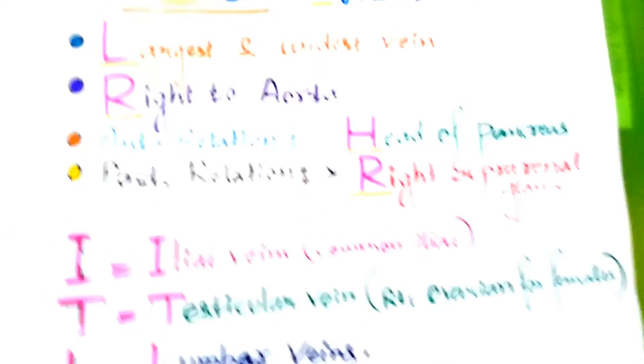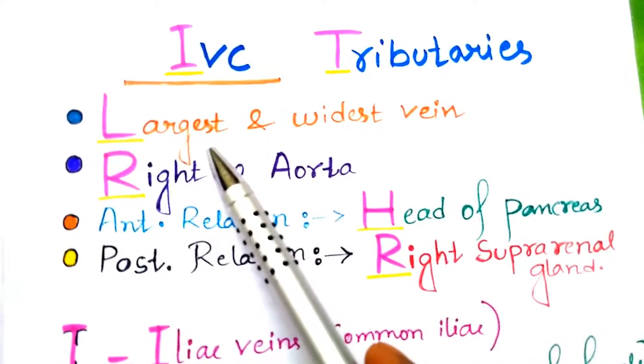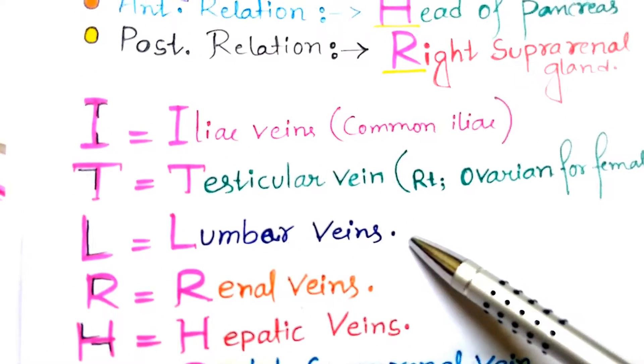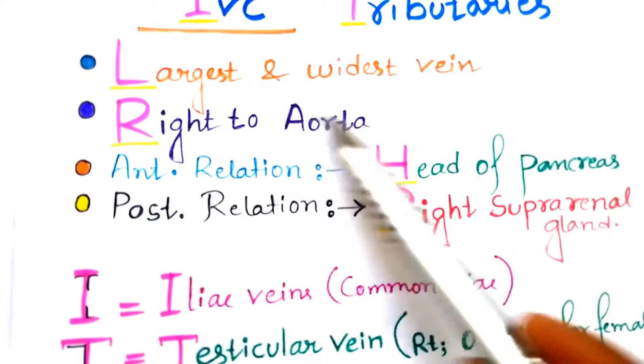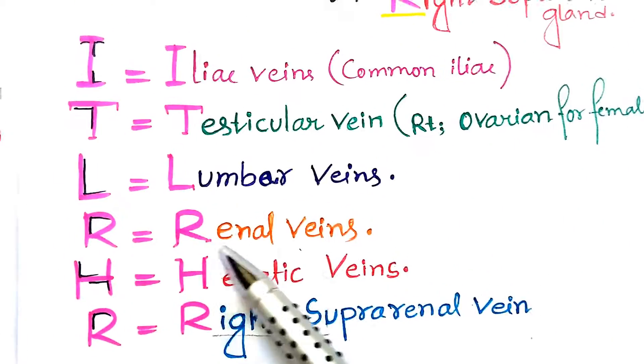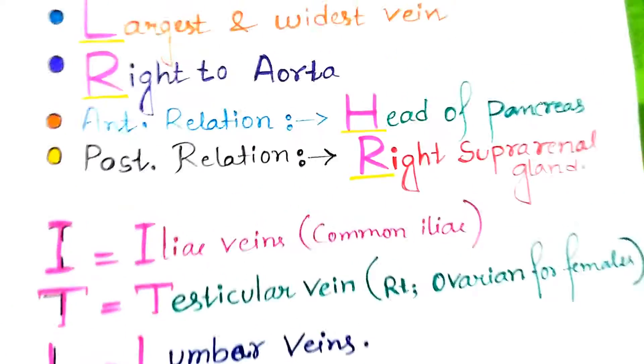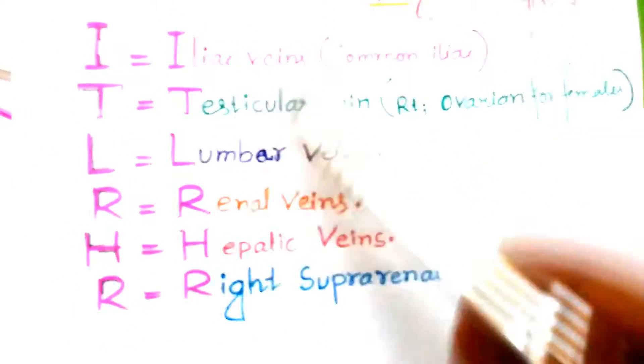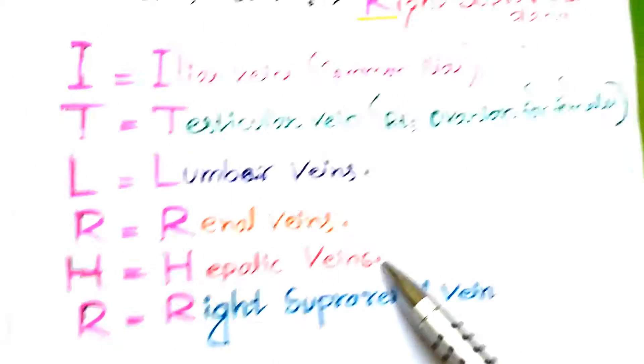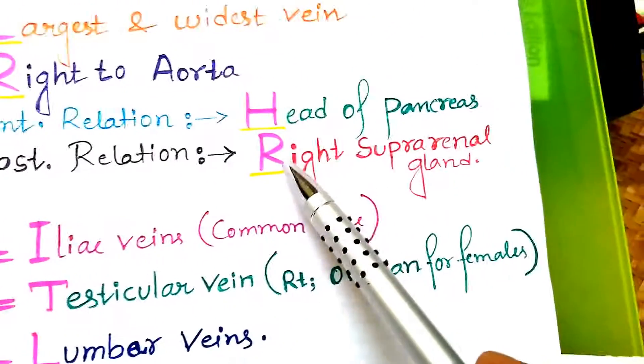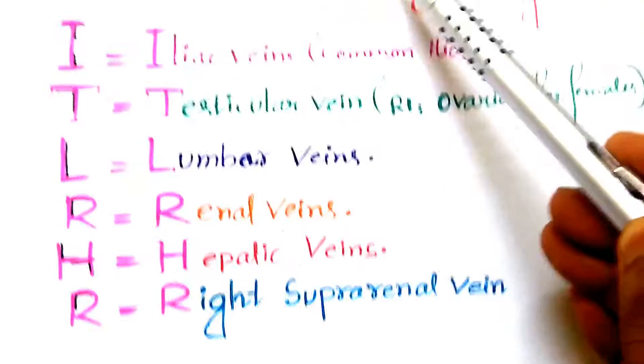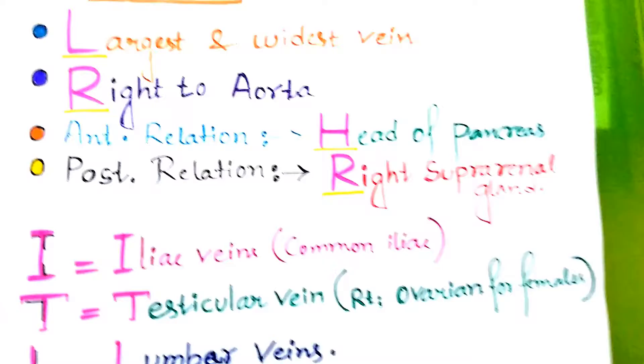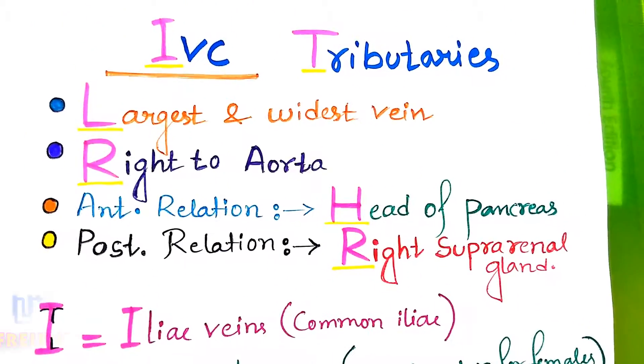There is largest vein, so L for lumbar veins. Right to that of aorta, so R for renal veins. There is anterior relation head of pancreas, H for hepatic veins. And there is posterior relation right suprarenal gland, so R for right suprarenal vein.